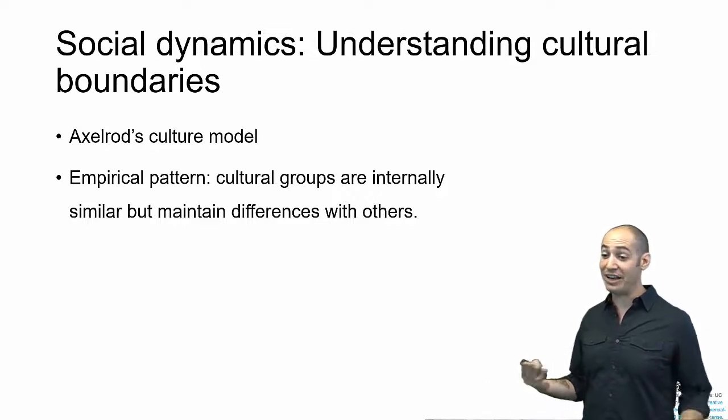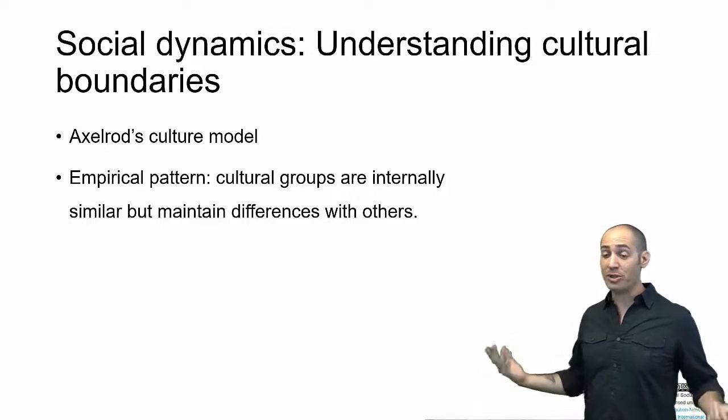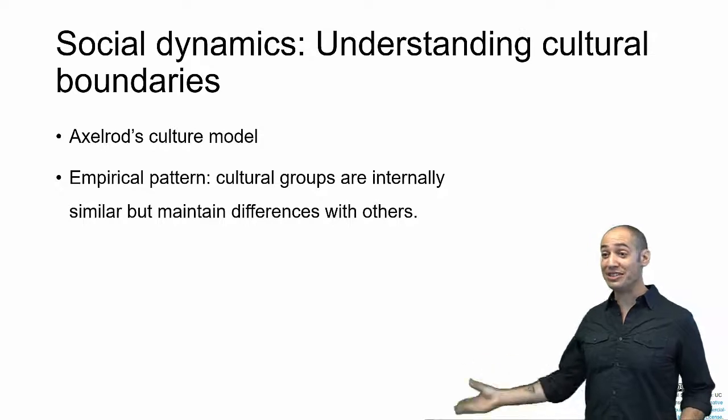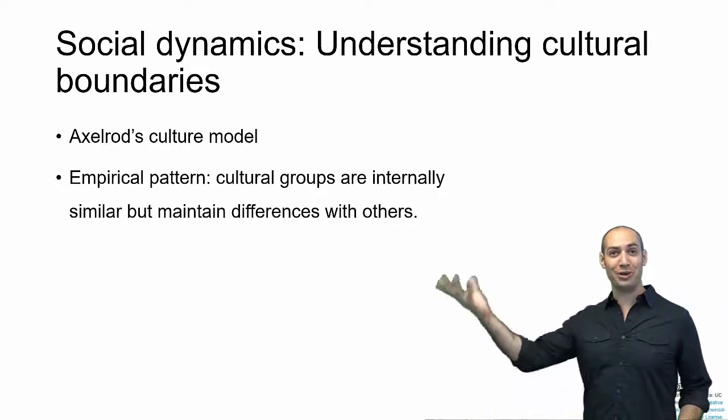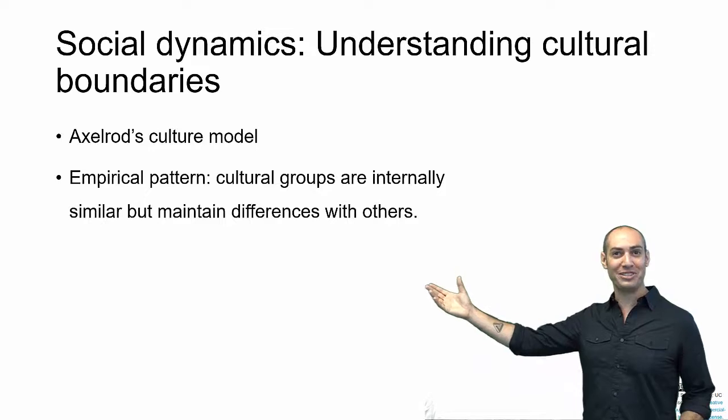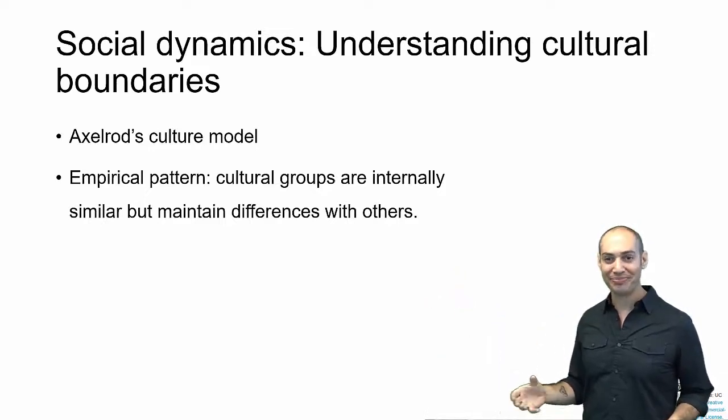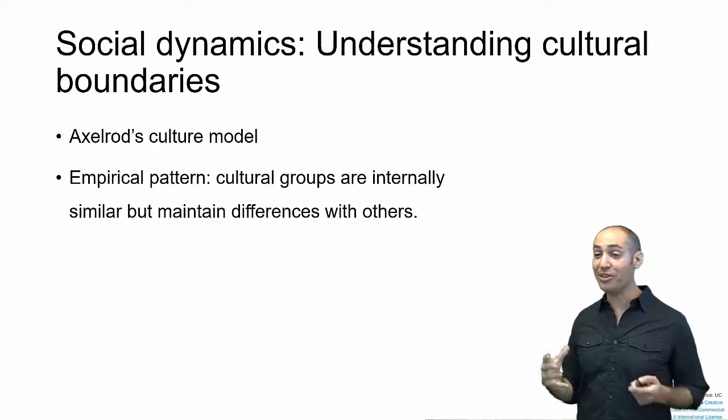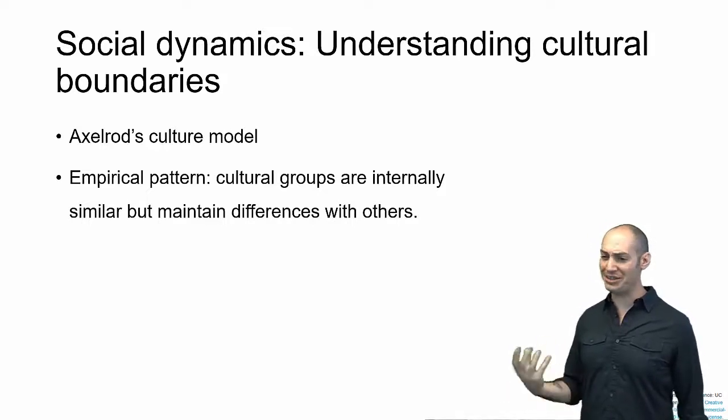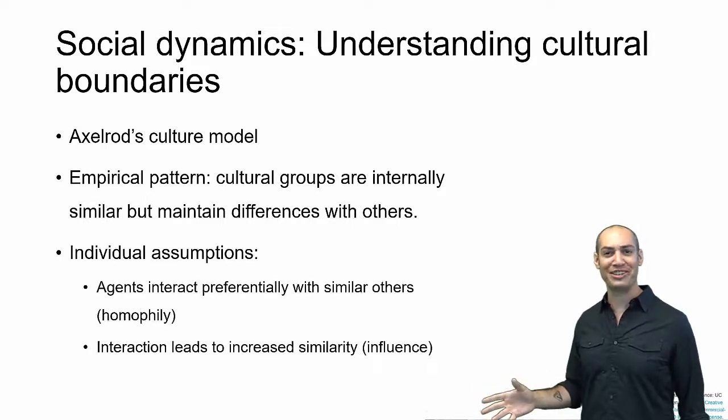It's based on the empirical question, the observation that cultural groups are internally similar, but they maintain boundaries. They maintain their differences with each other. An example I like is that in the United States, everyone speaks the same language, but in the South, they call what they call Coke, is what in the Midwest they call pop, and the Northeast is what they call soda. And these boundaries are fairly stuck. And within those populations, everybody uses the same terminology. You can get a lot more detailed, and there's a lot more depth there, but that's kind of a fun example.